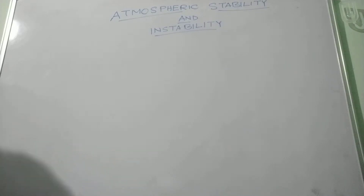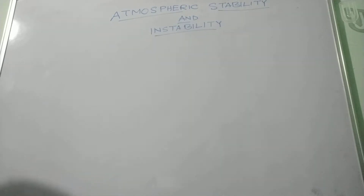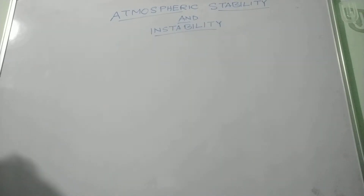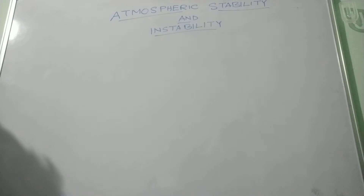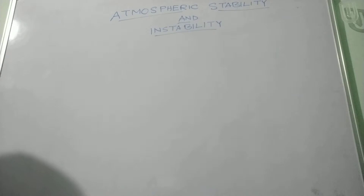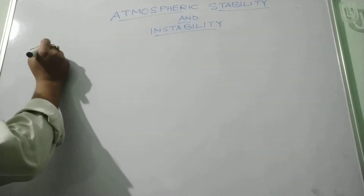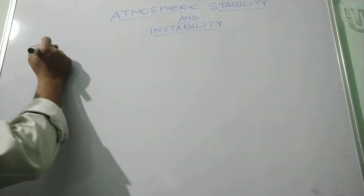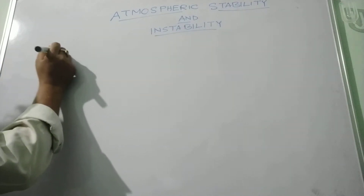Hello friends, today we are going to discuss about the atmospheric stability and instability, which is one of the most important phenomena for the development of different forms of precipitation like dew, fog, frost, snowfall, rainfall, etc. So the forms of precipitation depend upon the atmospheric stability and instability.